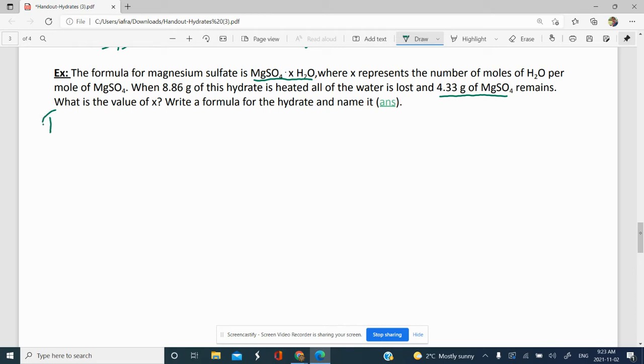Let's go ahead and do all the steps there. First, we need to find the mass of water. The mass of water is simply going to be the difference between the mass of the hydrate that you started off with, the 8.86 grams, and the mass of the anhydrous, the 4.33 grams. When you do that, you get 8.86 minus 4.33, and we get 4.53 grams.